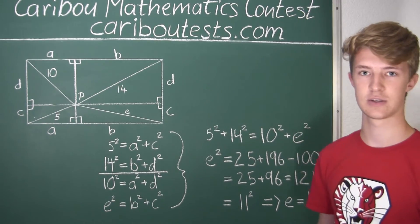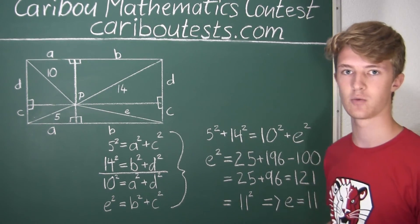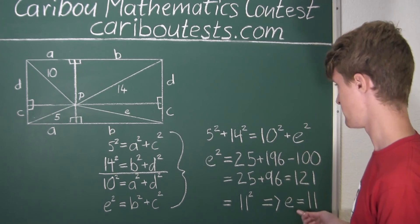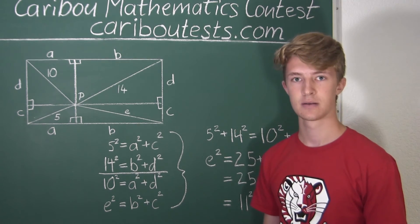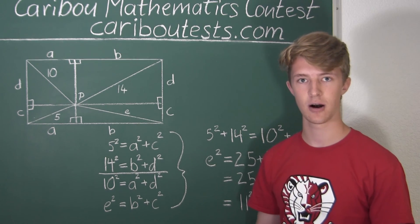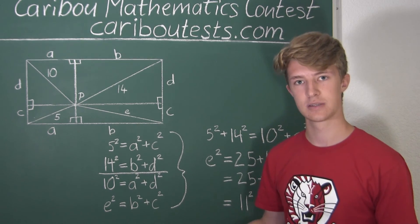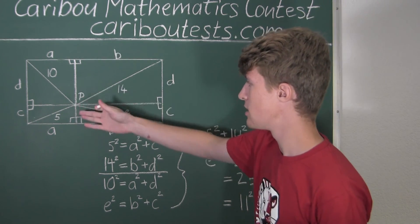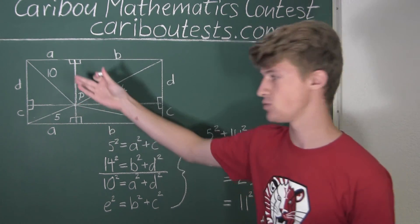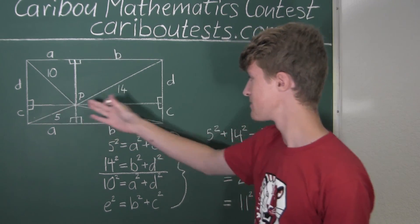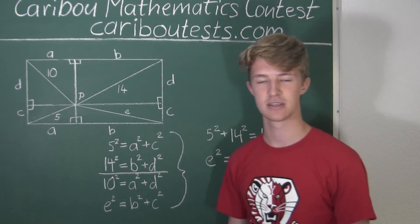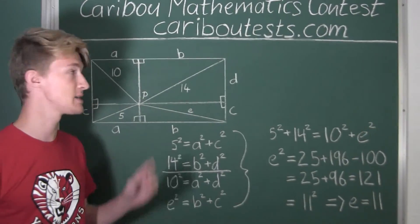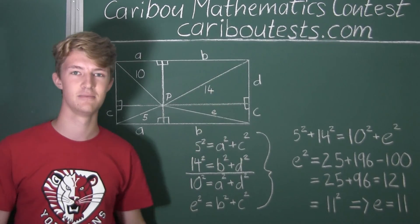So the answer is 11, which would be option C. The key to solving this problem was thinking about drawing the two extra parallel lines through P. If you'd like to know more about this contest, please feel free to visit our website at www.careabouttests.com.